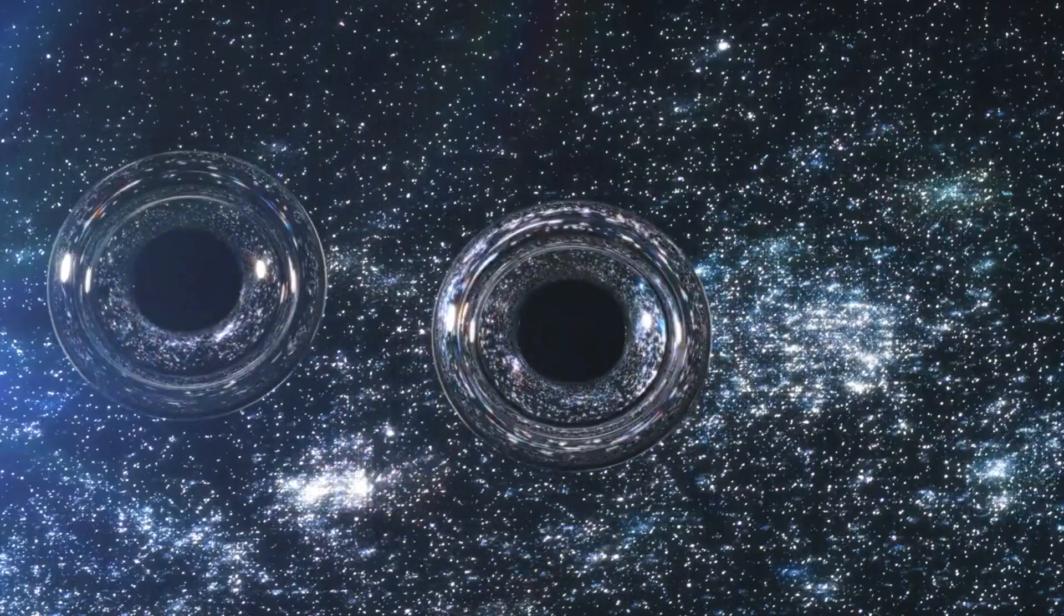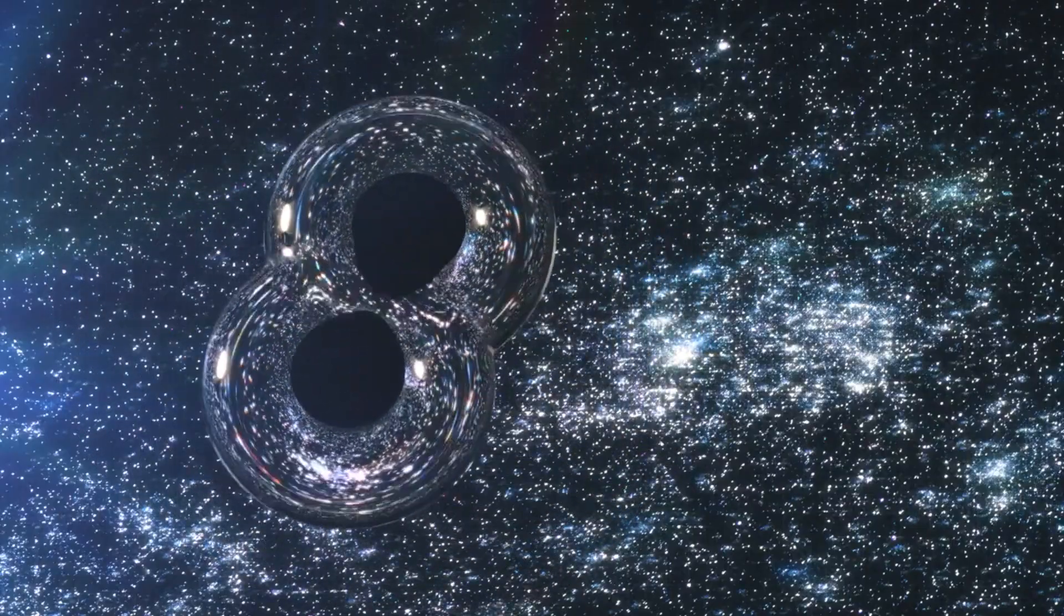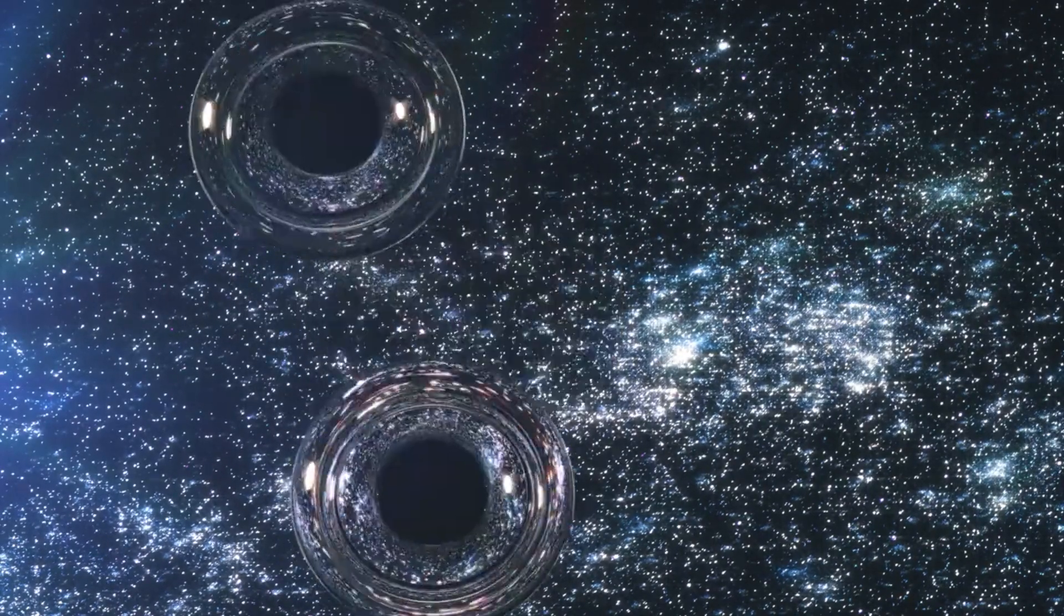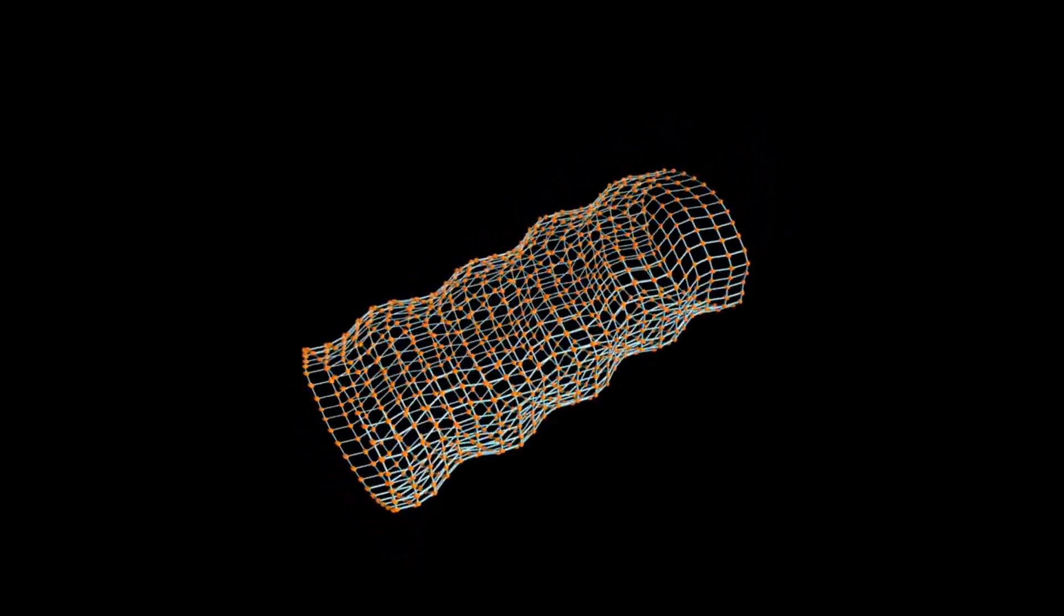The detected gravitational waves originated from two black holes, roughly 29 and 36 solar masses, merging to form a single black hole of about 62 solar masses. The energy equivalent of about three solar masses was emitted as gravitational waves during the merger, producing the signal that LIGO detected.